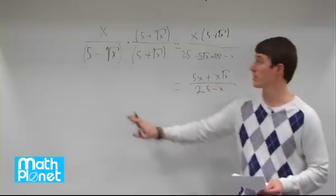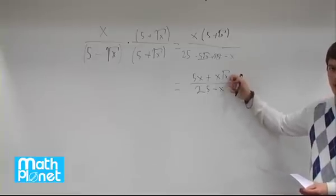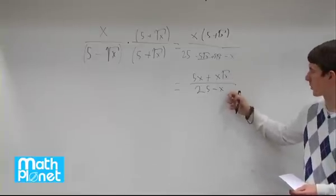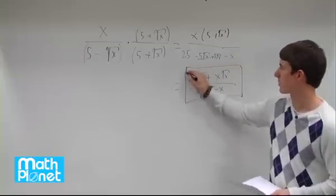So perhaps it doesn't look more simple than this original, but we now have the radical or the square root of x in the numerator. So it's written in a form that we're allowed to write in. So we're done here. Simple as possible. And that's it.